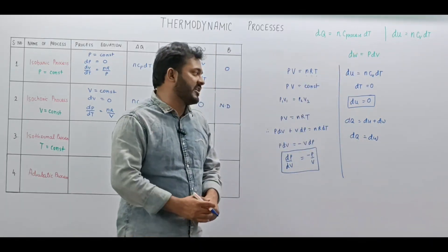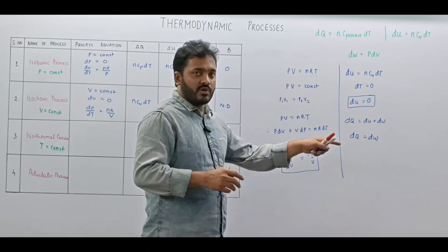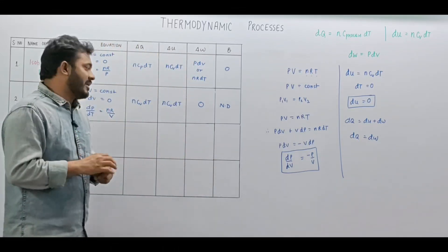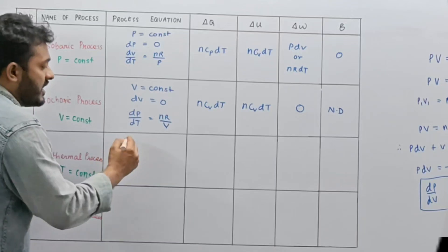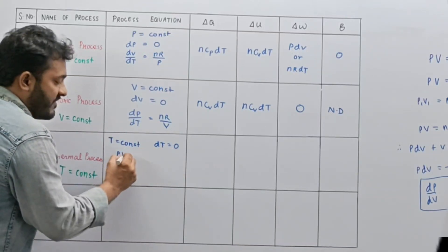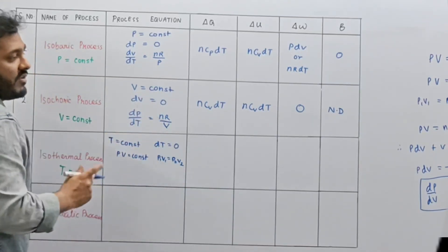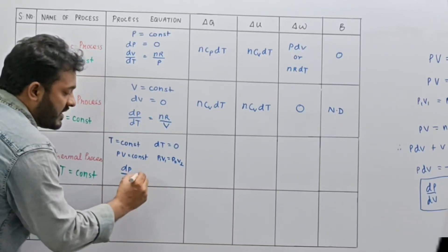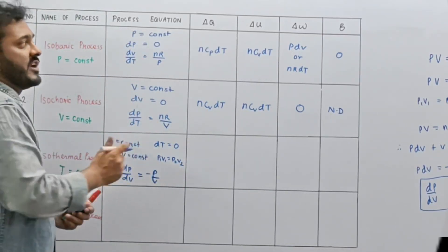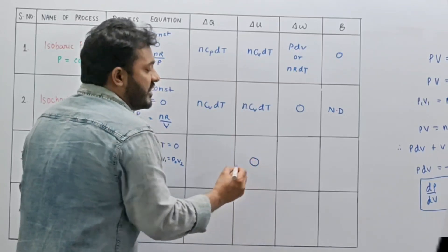We do not calculate a specific C-process for the isothermal process. For isothermal process: temperature is constant, dT equals 0, PV equals constant or P1V1 equals P2V2, and the differential equation is dP/dV equals minus P/V. These are all the various ways to describe the isothermal process. Since change in temperature is 0, DU equals 0.